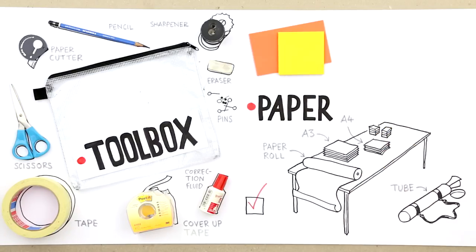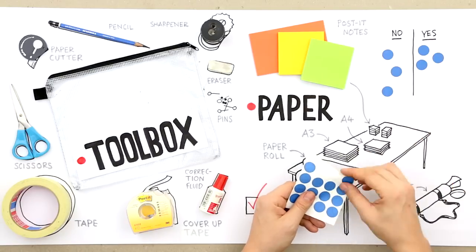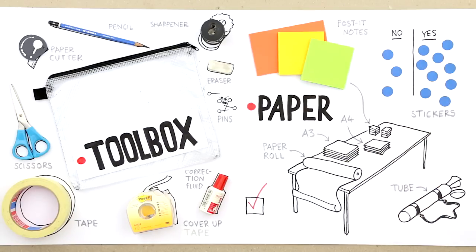You also need post-it notes in many sizes, colors and shapes. These are great for gathering input, mapping and clustering ideas. You may also need small stickers, ideal when mapping or voting in teams.